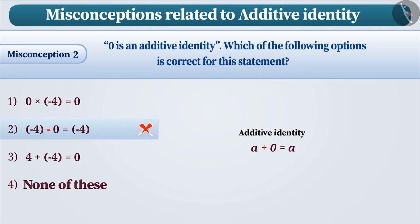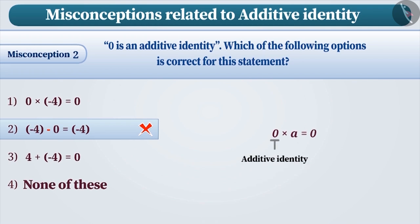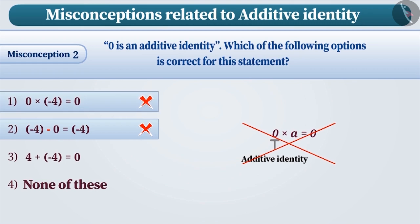Similarly, some children understand that when 0 is multiplied with any integer, then the result is 0. Therefore, 0 is the additive identity. This is an incorrect understanding. With this understanding, option 1 is given as an incorrect answer.